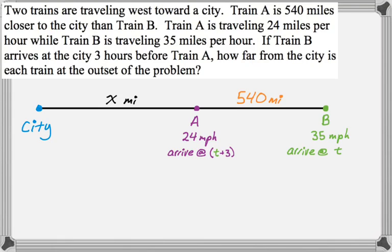And now I can figure out the distances that they travel. So from the picture, and the picture is key. If you can draw the picture, you can solve the problem. Now, from the picture, I know that A travels X miles to get to the city, whereas B has to travel X plus 540 miles. So it's got to go a lot farther.